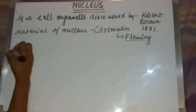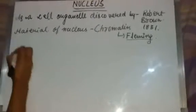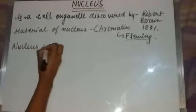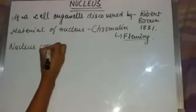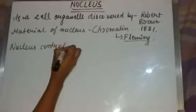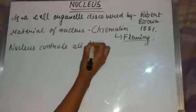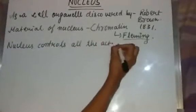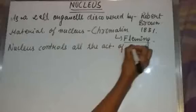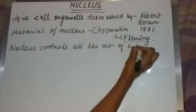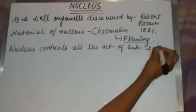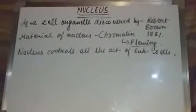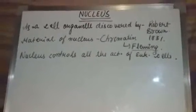The nucleus controls all the activities of eukaryotic cells. It is a relatively large organelle.